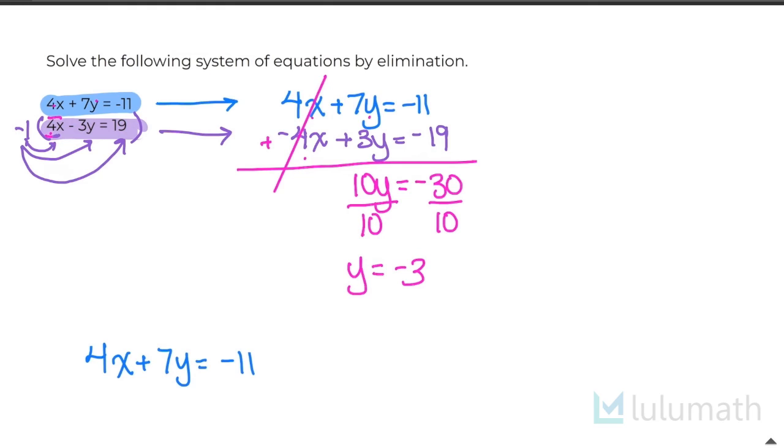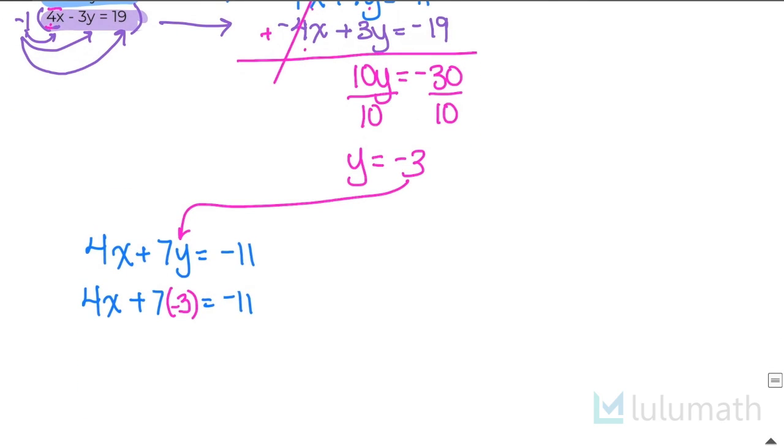And I'm going to replace this negative 3 in for y. So I'm going to write down 4x plus 7, but instead of 7 times y, I'm going to say 7 times negative 3 and then equals negative 11. And then I can just go through and just continue solving. So I get 4x, 7 times negative 3 is negative 21.